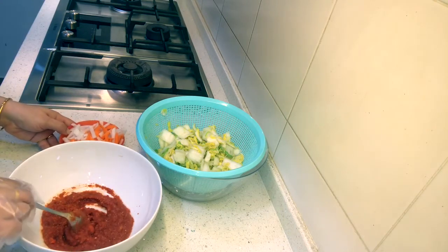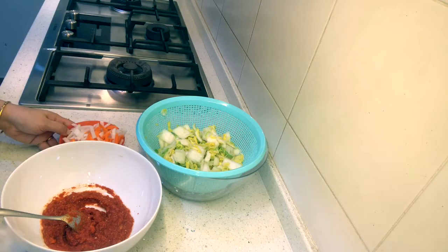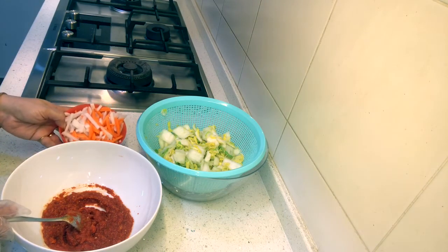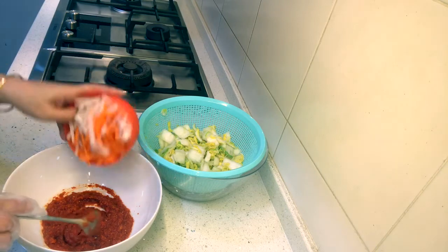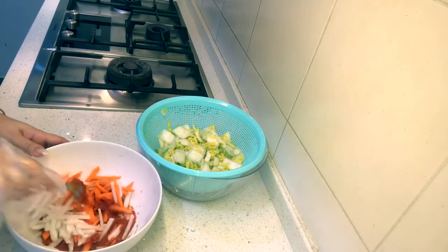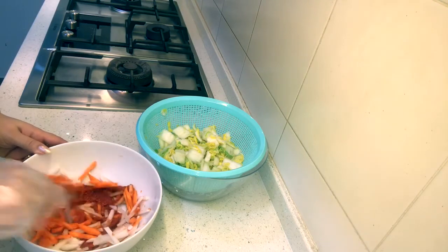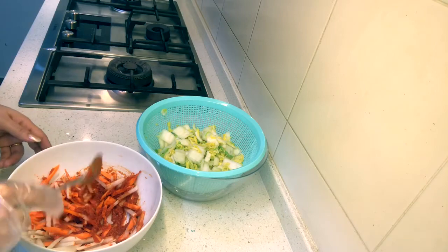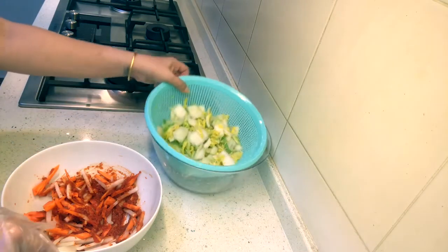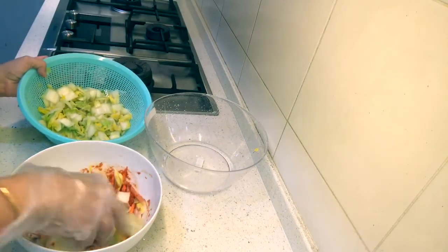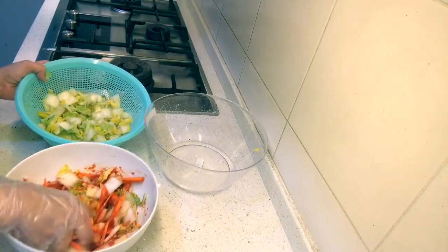Now we'll wear the gloves so that the chilies don't sting our hands. Now we are going to put our daikon or radish and the carrots into this paste and give it a mix. Now slowly and gradually add the cabbage and try to coat it with the paste very nicely.